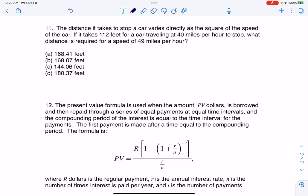Hey everyone, let's take a look at our next multiple choice question. It says, the distance it takes to stop a car varies directly as the square of the speed of the car. If it takes 112 feet for a car traveling at 40 miles an hour to stop, what distance is required for a speed of 49 miles per hour?